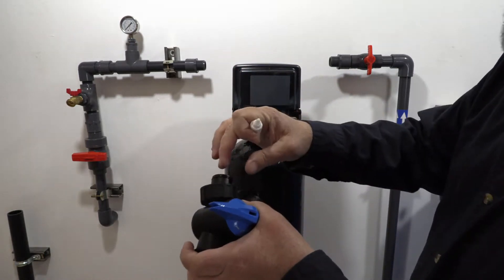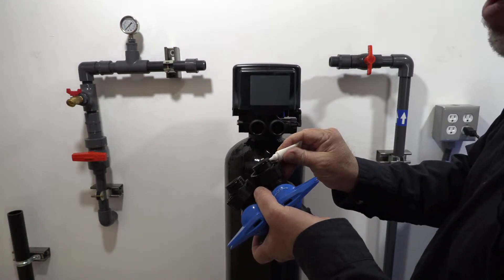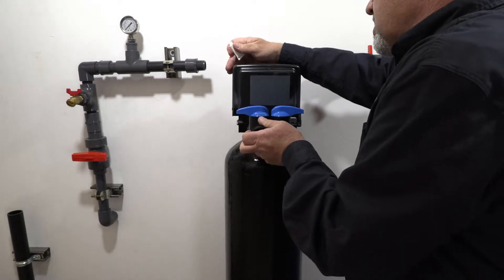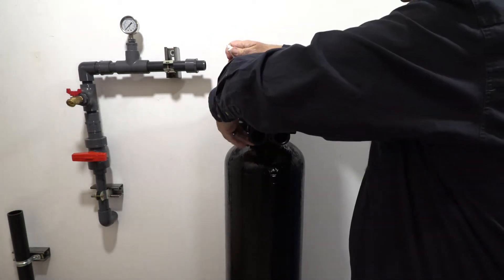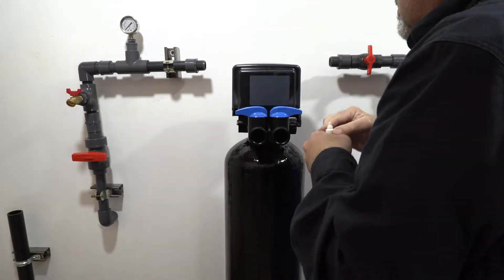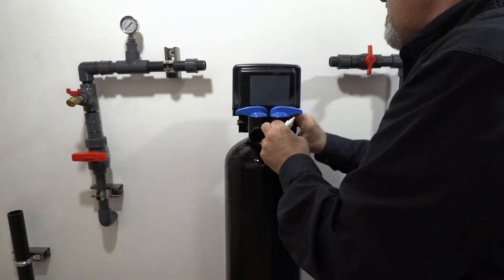Again, these bypass valves have o-rings. We'll want to lube those as well. And then match up your arrows and this guy will just pop in like that and you can just hand tighten these nuts here. Again, you don't need a wrench on these. Hand tighten is fine.